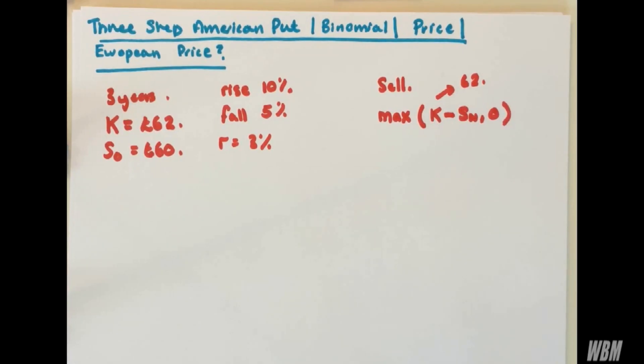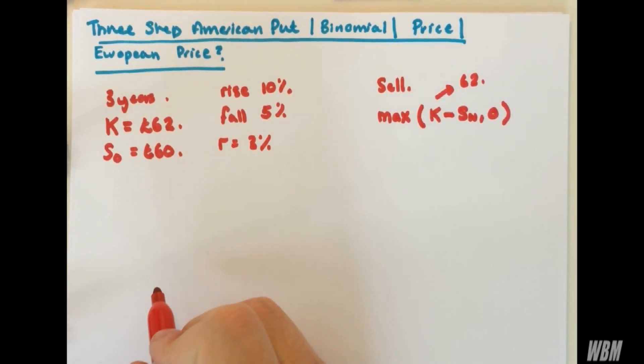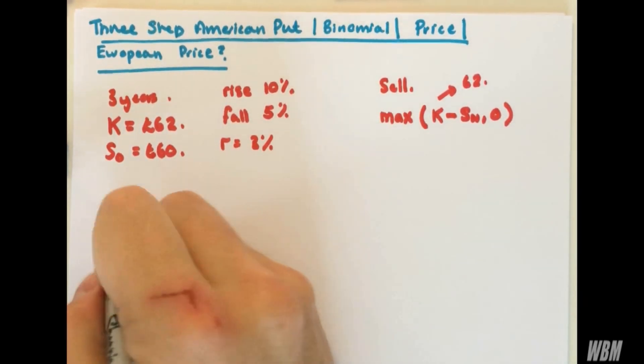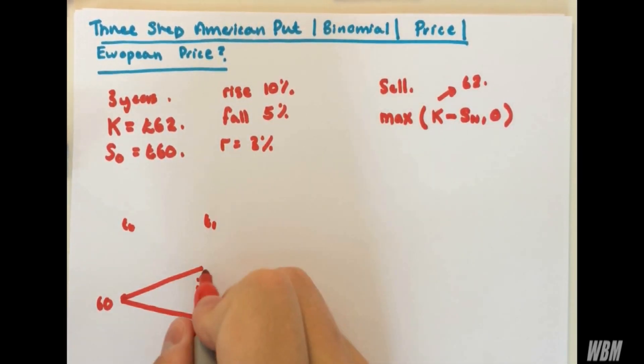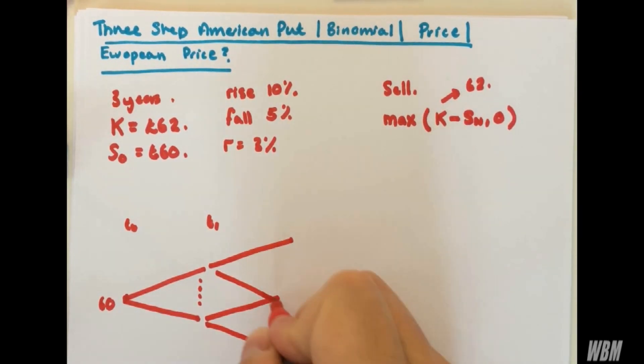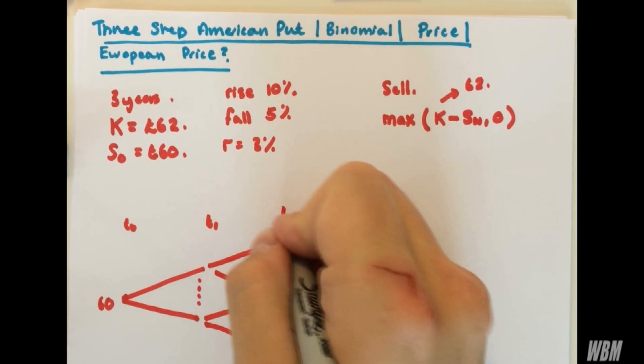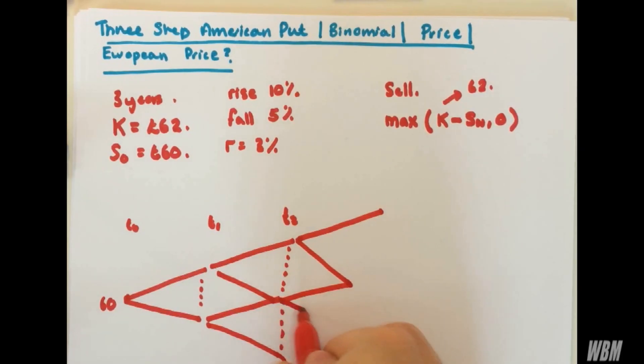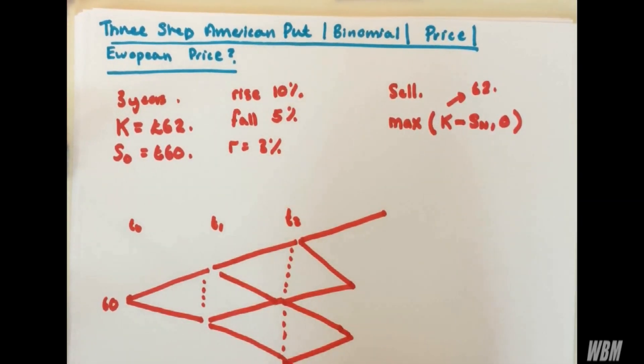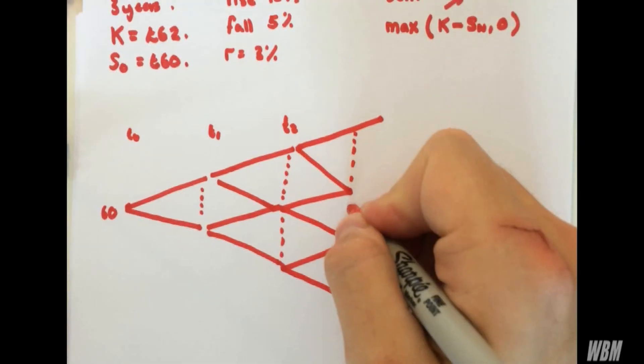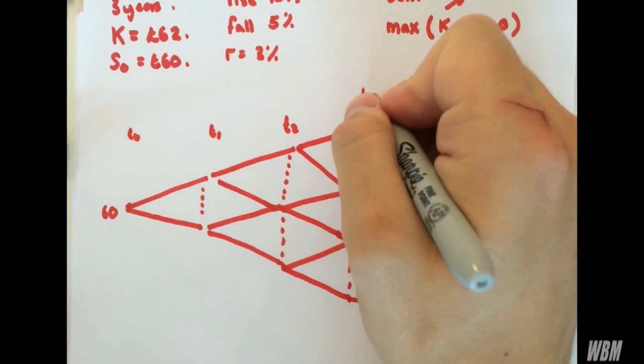The first thing I recommend doing is to draw a binomial tree. So you start here at 60, and it can go up or it can go down. And then when you get to time step zero here, this is time step one, it can go up again, it can go down again. So now we're at time step two. And finally, it can go up, down, up, down, up, and down. And here we have T3.